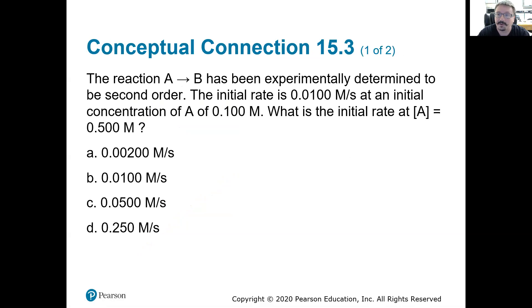So the reaction A to B has been experimentally determined to be second order. So second order with respect to A. The initial rate is 0.01 molarities per second. So that's how quickly we're forming that product or losing that reactant per second at an initial concentration of A of 0.1 molarity. What's the initial rate at A equal to 0.5 molarity? Well, in this case, we went from 0.1 to 0.5. So we quintupled our concentration. So we'd have our concentration A, if it's second order, raised to the second power. What's 5 raised to the second power? 25. So we should go from, we should take that 0.01, that initial rate, times 25 gives us 0.25 molarity per second.